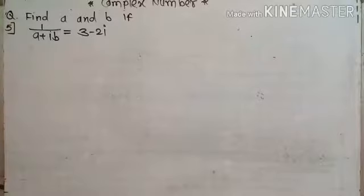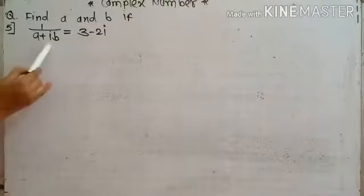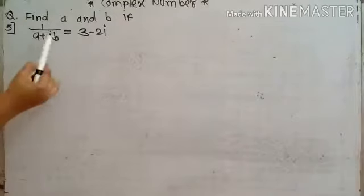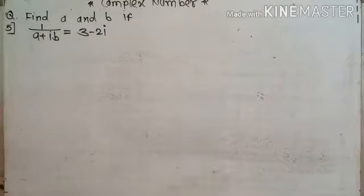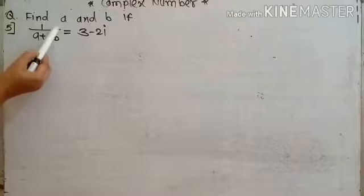The next example: when A plus iB is equal to 1 divided by 3 minus 2i, find the value of A and B. In this question, the denominator is complex. We apply real equal to real and imaginary equal to imaginary after rationalizing. If there is a complex denominator, we rationalize it.